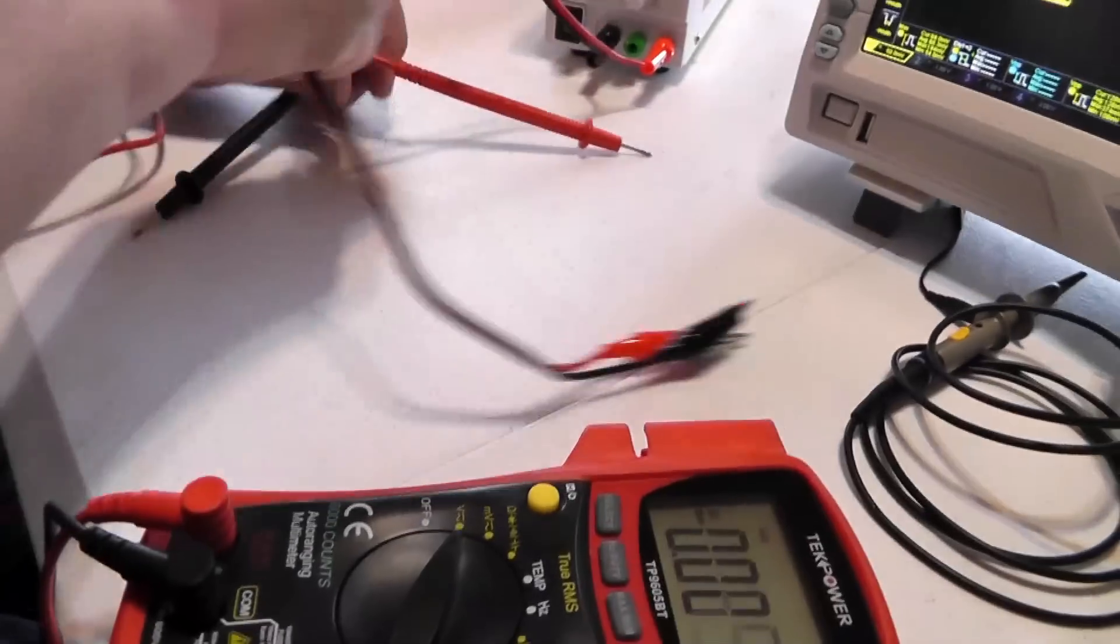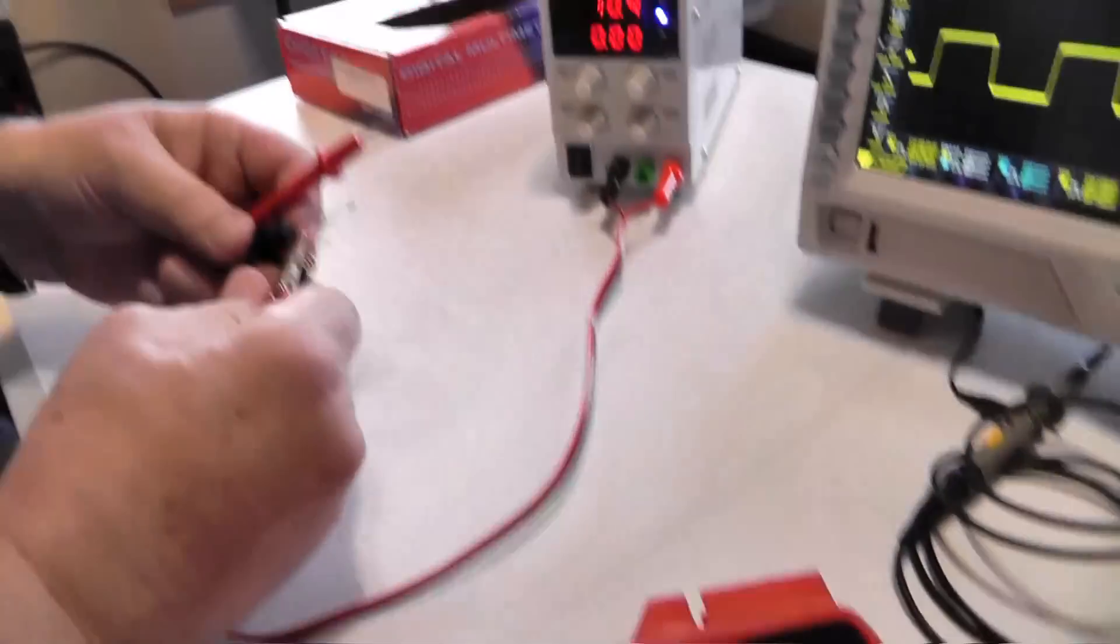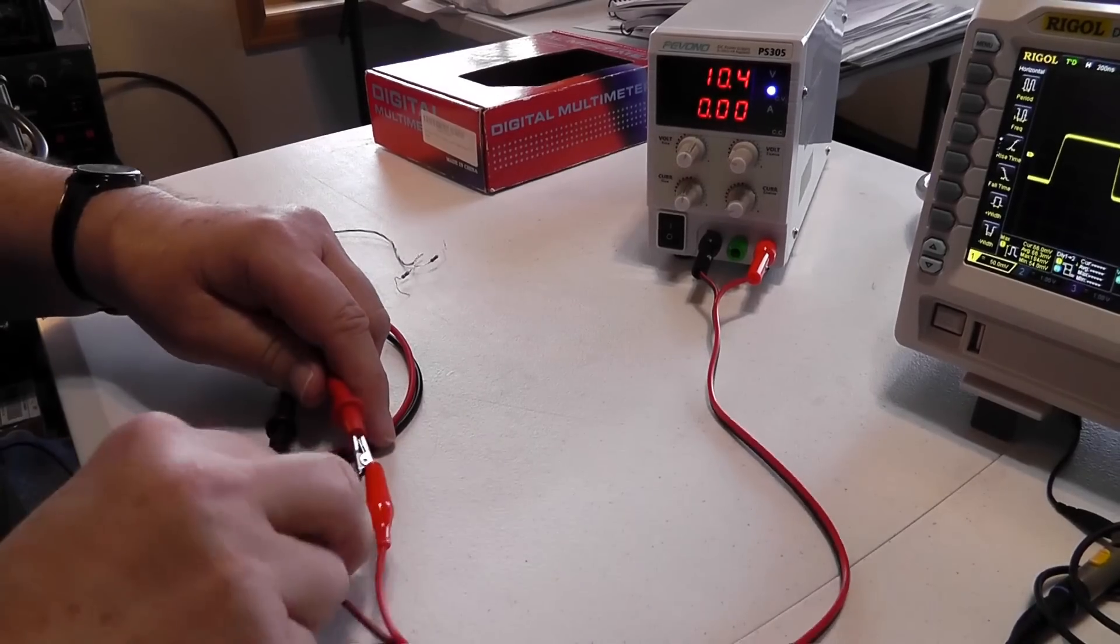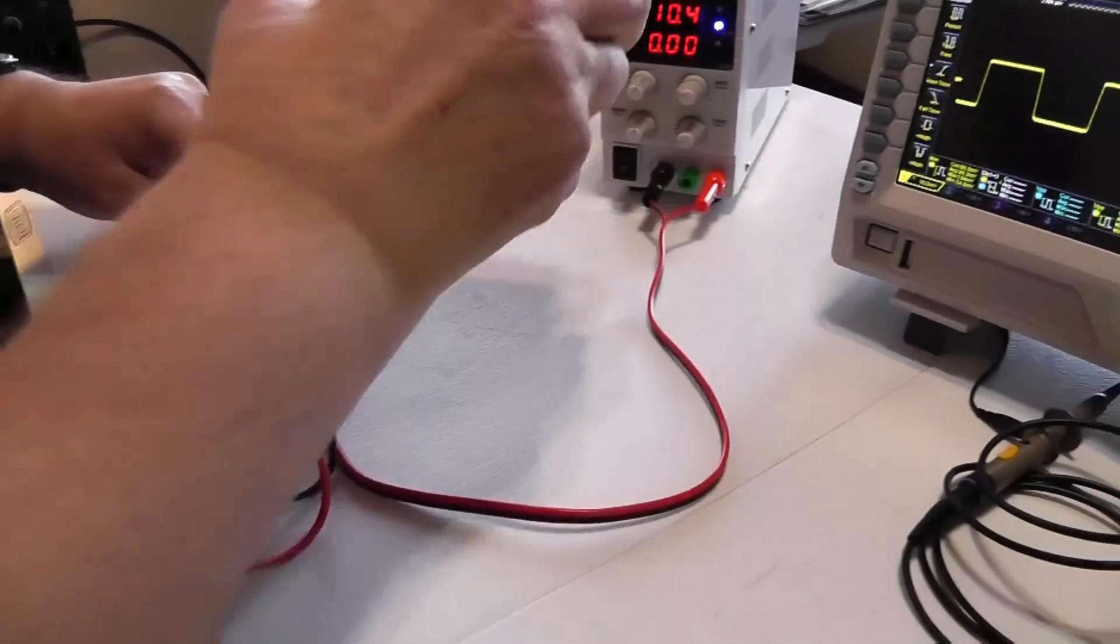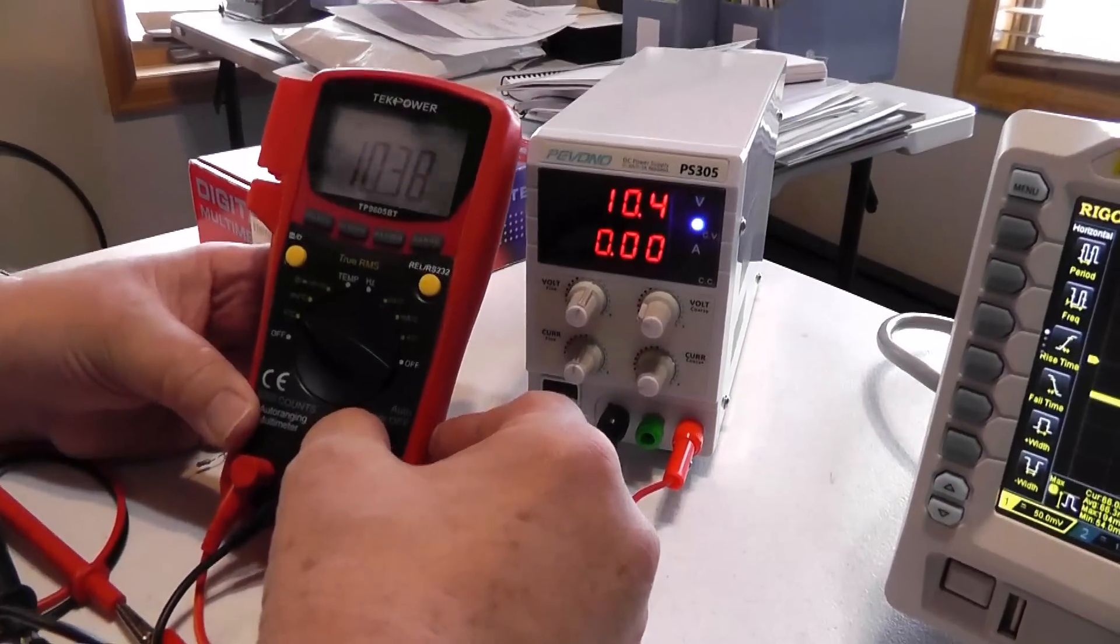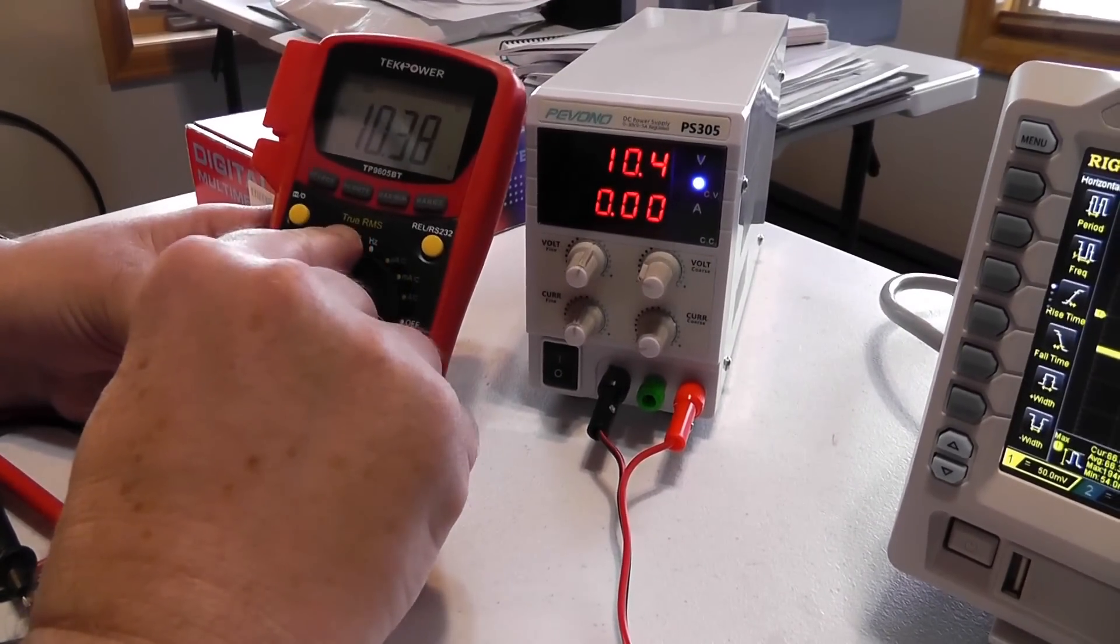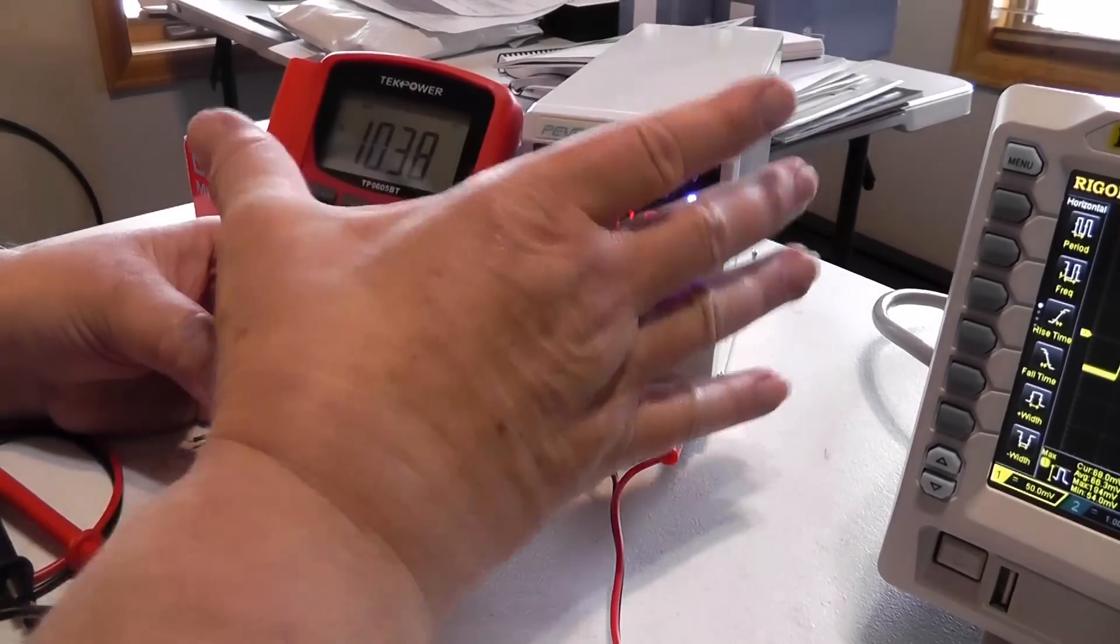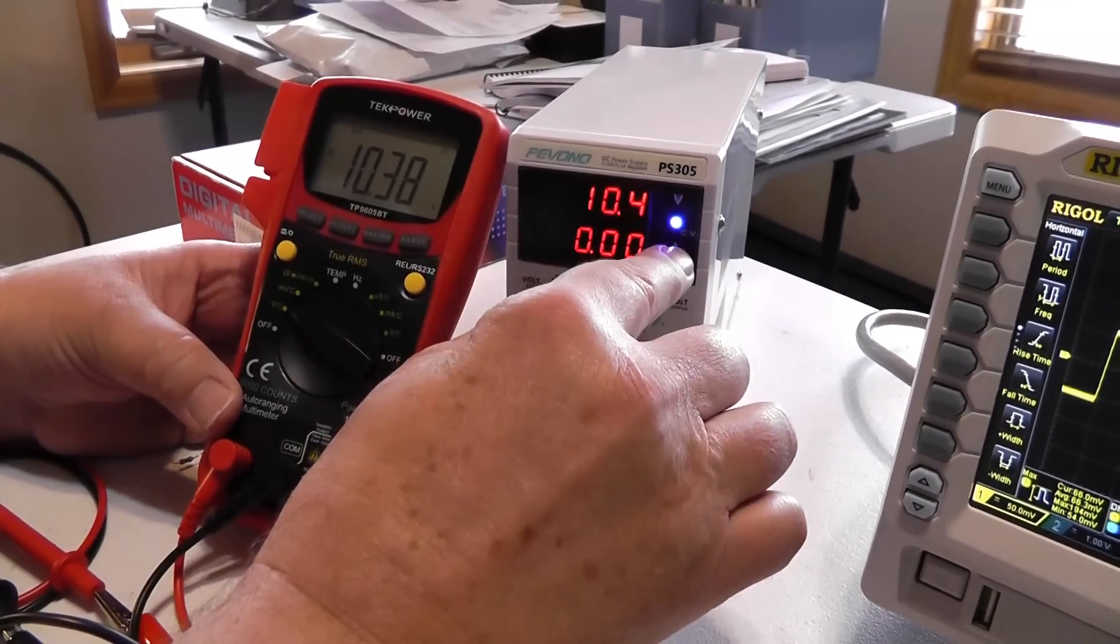what we can do is hook this to the power supply. Now this is an auto ranging power supply. You can do AC or DC. If you're doing AC, it'll give you the RMS voltage and you want one that gives you true RMS. If you're doing DC, it'll give you the right DC. There's a very slight difference between these two. 10.38 here, 10.4 there.